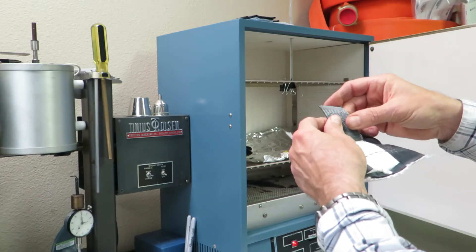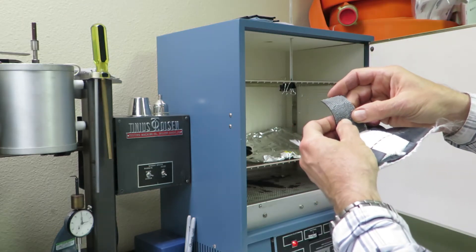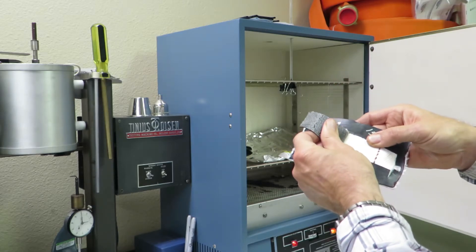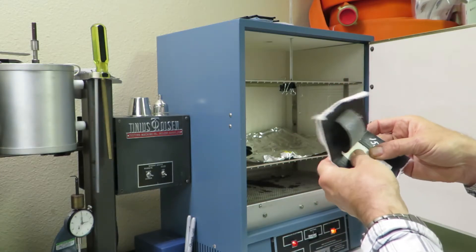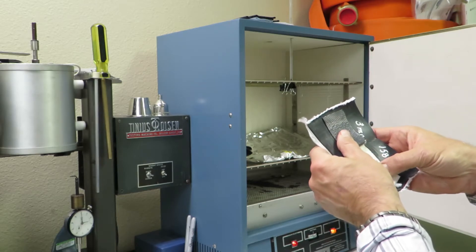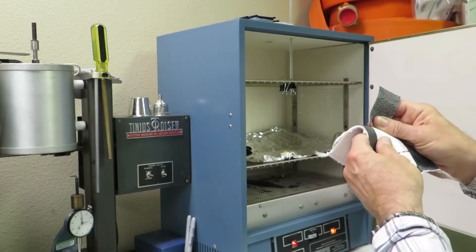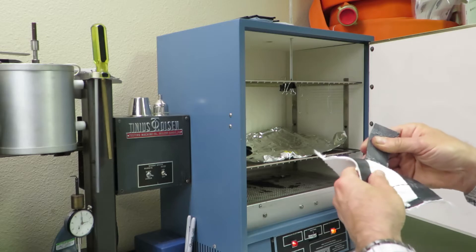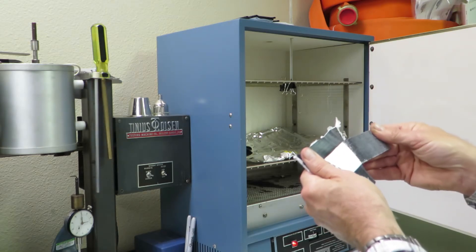The hot melt glue re-liquifies at that temperature and is wicked away by the inner jacket fibers. So the adhesion is lost.